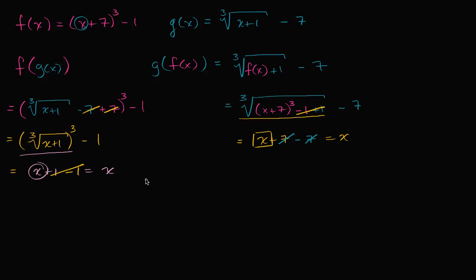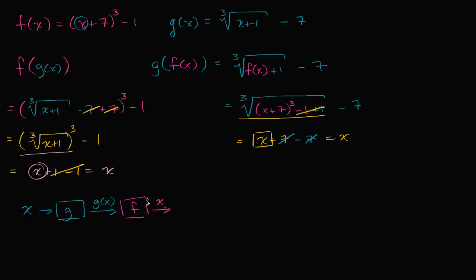So we see something very interesting. f of g of x is just x, and g of f of x is x. So if we start with an x, input it into the function g, and get g of x, and then input that into the function f — f of g of x gets us back to x. We did a round trip. And the same thing happens if we put x into f first.